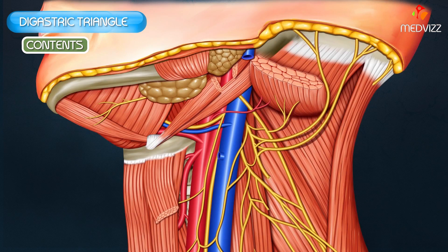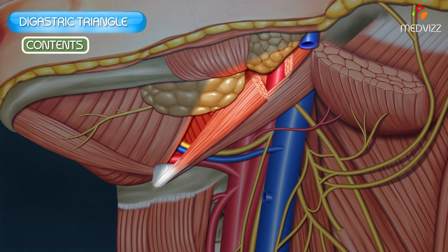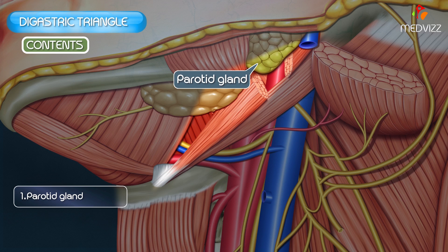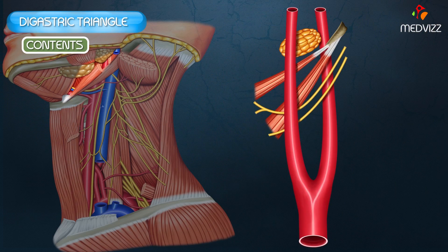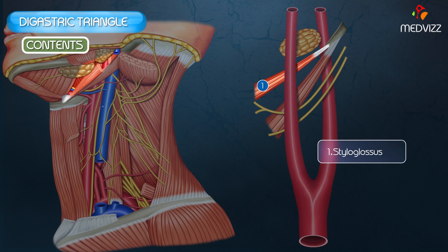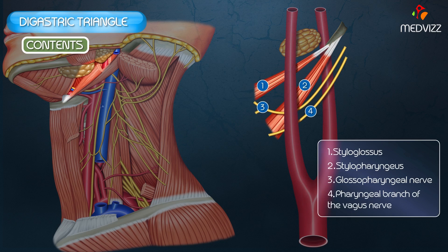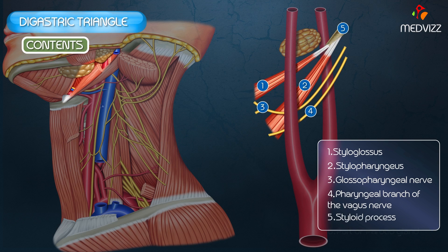In the posterior part of the triangle, the superficial structures are the lower part of the parotid gland as well as the external carotid artery before it enters the parotid gland. The deep structures passing between the external carotid arteries are the styloglossus, the stylopharyngeus, the glossopharyngeal nerve, the pharyngeal branch of the vagus nerve, the styloid process, and a part of the parotid gland.